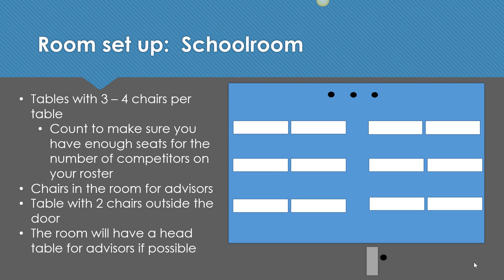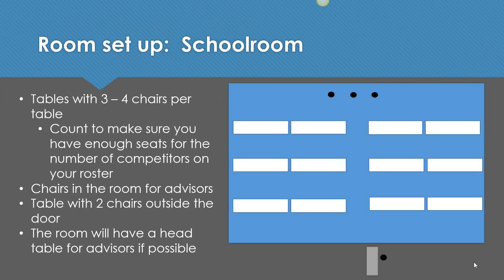Your room should be set up in what's called a school room set, which are just tables and chairs for your students. Each table should have three to four chairs, and make sure that you have enough chairs for the maximum number of students for that event. You will have some chairs in the room for the advisors, and if there is room, a table for the advisors as well. You will also have a table and two chairs outside the door of the room to help you organize when getting the students in.